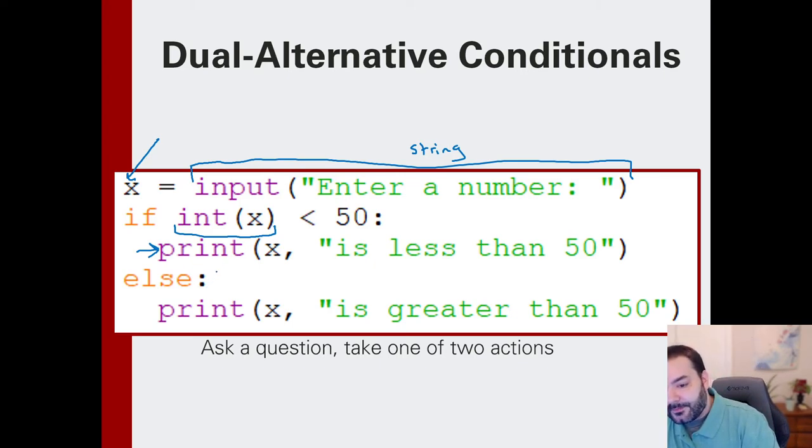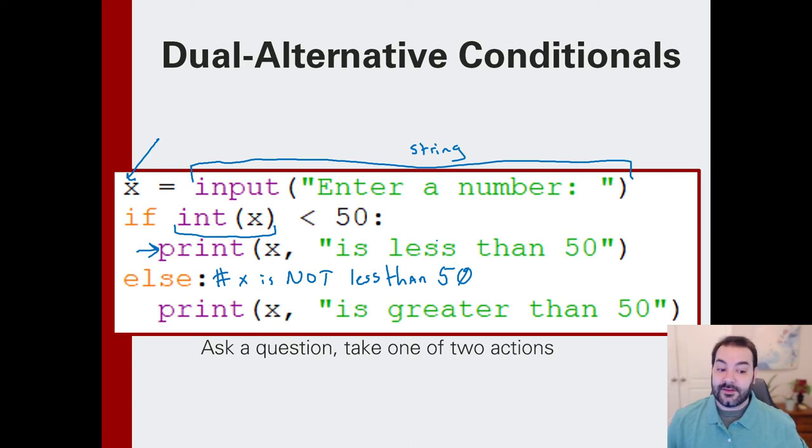But else, x is not less than 50. In that case, it's greater than 50. Technically, it could also be 50, greater than or equal to 50. But for the sake of space on my screen, I just did not do that in place. So let's see this in action.